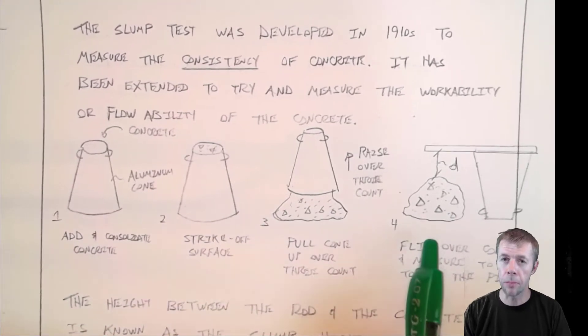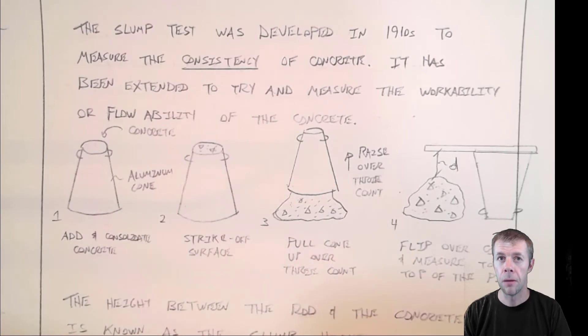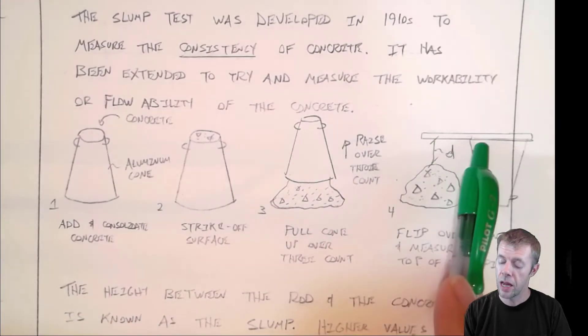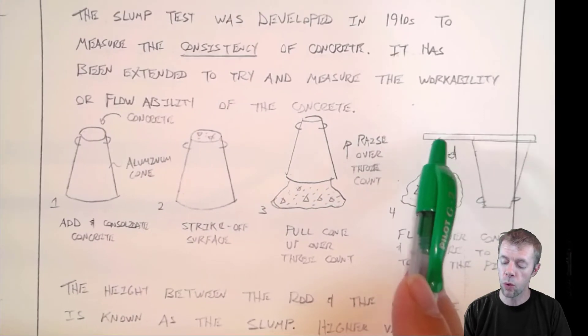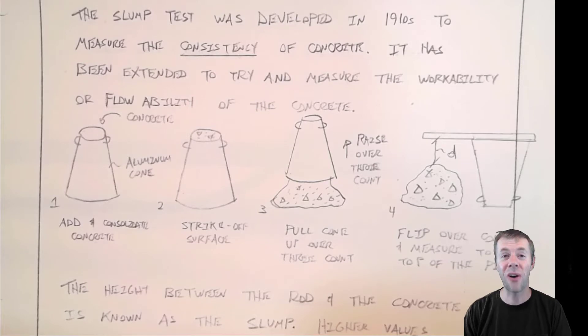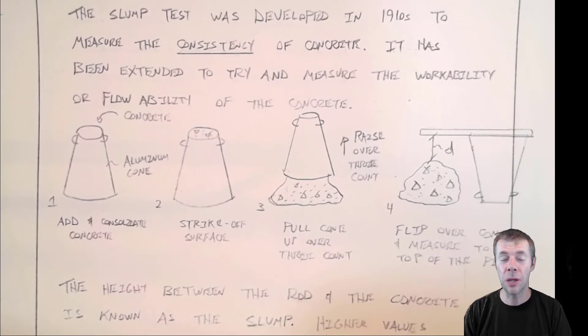And it kind of slumps, falls over into a big puddle or pile. Kind of crazy, huh? Well, then you flip this cone over, you put the rod on top, and then you measure the distance from the rod to the top surface of the big pile of concrete. Pretty awesome, huh? Pretty simple. And again, it tells us really useful stuff.